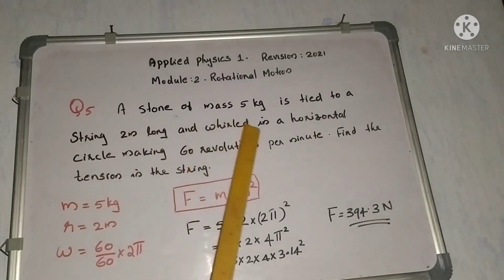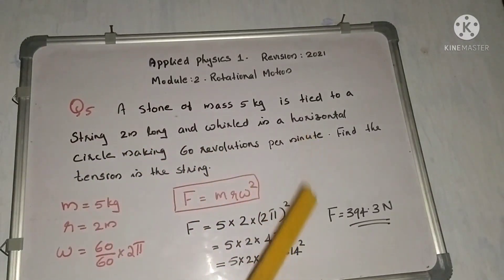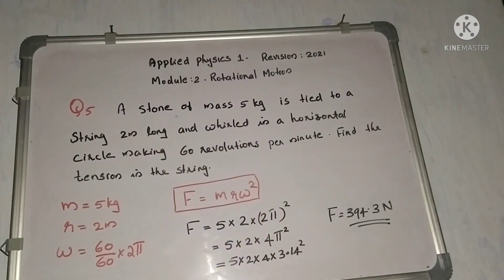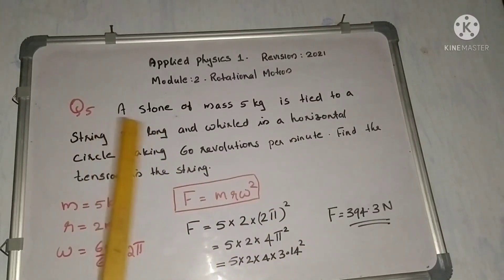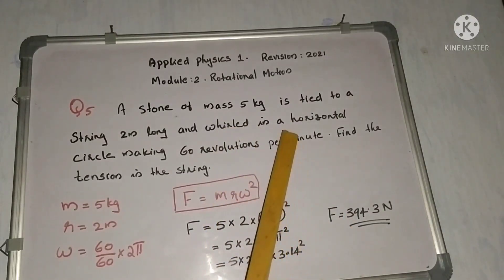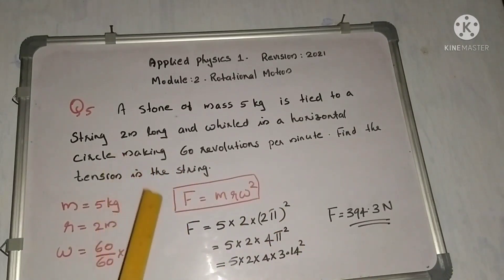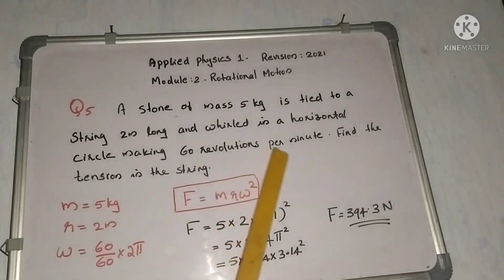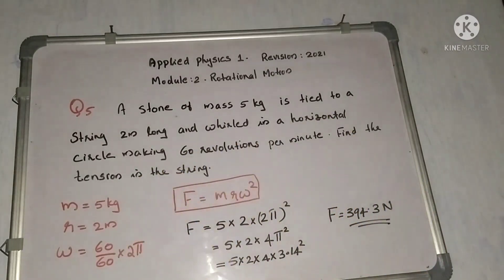Next problem: a stone of mass 5 kg is tied to a string 2 meters long and whirled in a horizontal circle making 60 revolutions per minute. Find the tension in the string.